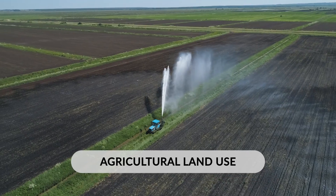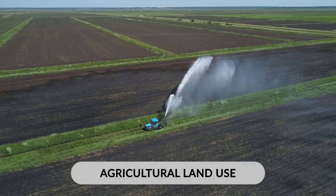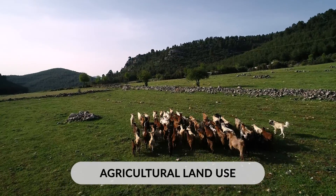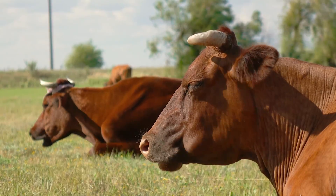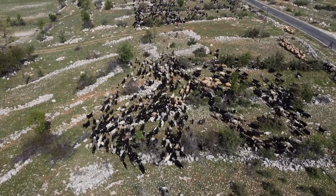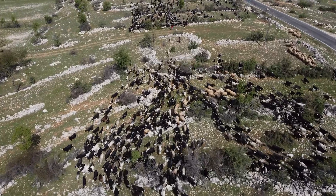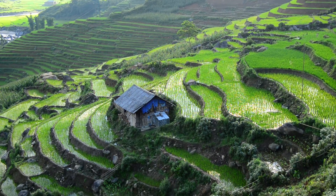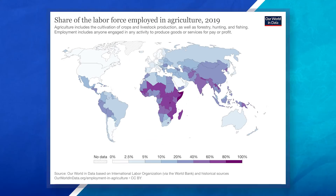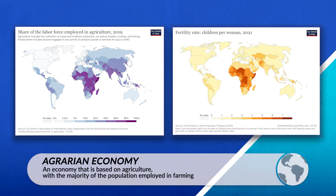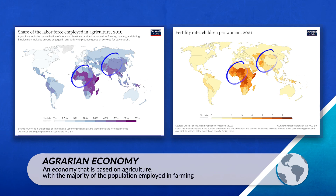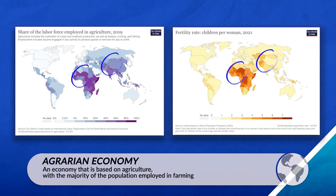Agricultural land use patterns consist of areas used for farming, cultivation, and agricultural production, often made up of crop fields, livestock farms, and agricultural infrastructure. These regions vary depending on factors such as climate, soil conditions, and agricultural practices. Generally, regions with less economic development will have a higher percentage of their workforce in agriculture. Societies with an agrarian-based economy also tend to have large family sizes compared to more economically developed economies.